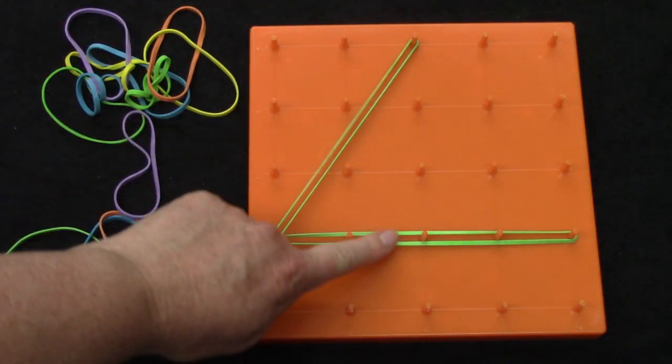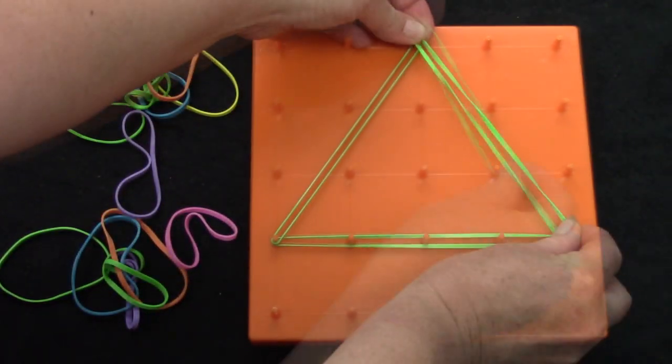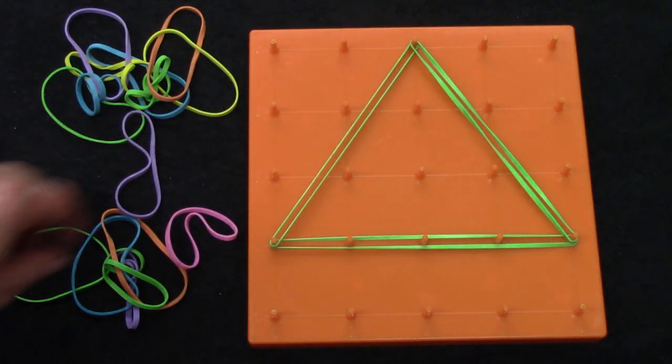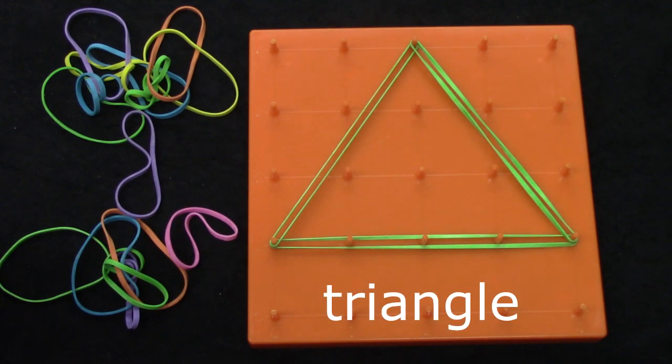I have one, two, three sides. One, two, three. What do we call a three-sided shape? You're right, it's a triangle.